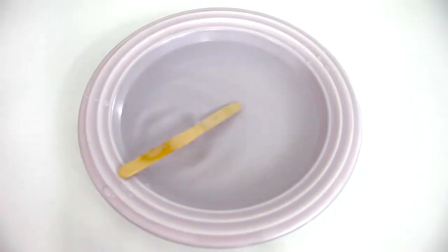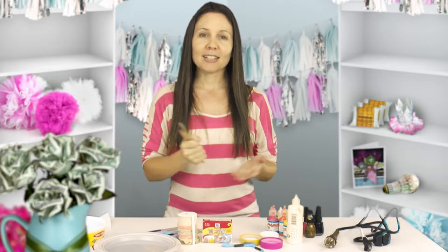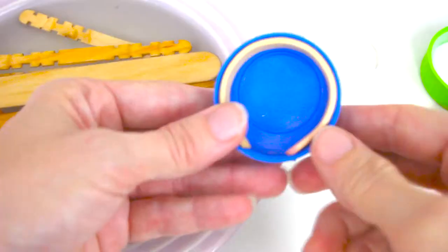Just place your popsicle stick in a bowl of water, place it in the microwave. I'm doing one and a half minutes, let it soak for a while. Then use your lid to form a bracelet shape. You can speed up the drying process by using a hairdryer.